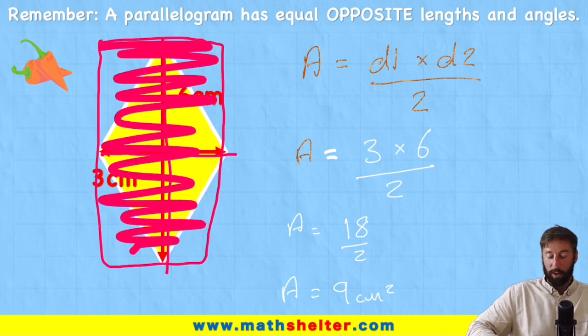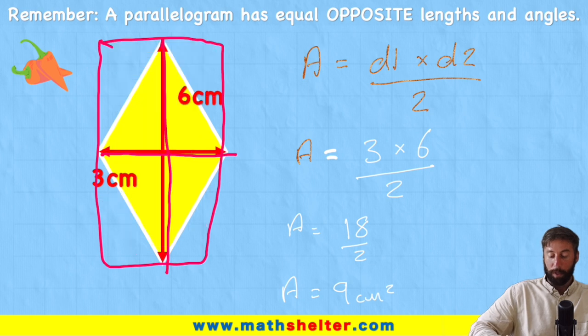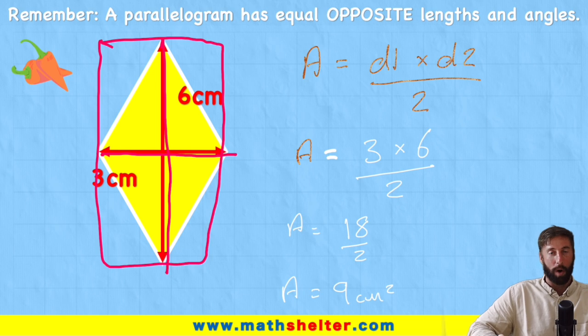But I'm not looking for the full rectangle. I'm only looking for the rhombus inside it. And the rhombus inside it will actually take exactly half of that rectangle's amount, which is why we divide by 2.